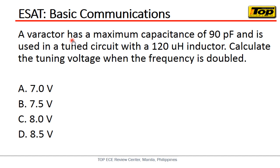Now, one example problem here: A varactor has a maximum capacitance of 90 picofarad and is used in a tuned circuit with a 120 microhenry inductor. So what we are asked is the tuning voltage when the frequency is doubled. When the frequency is doubled, what is the tuning voltage? And of course, what we're talking about here is the varactor. So the varactor has characteristics that will affect the frequency, the output frequency.